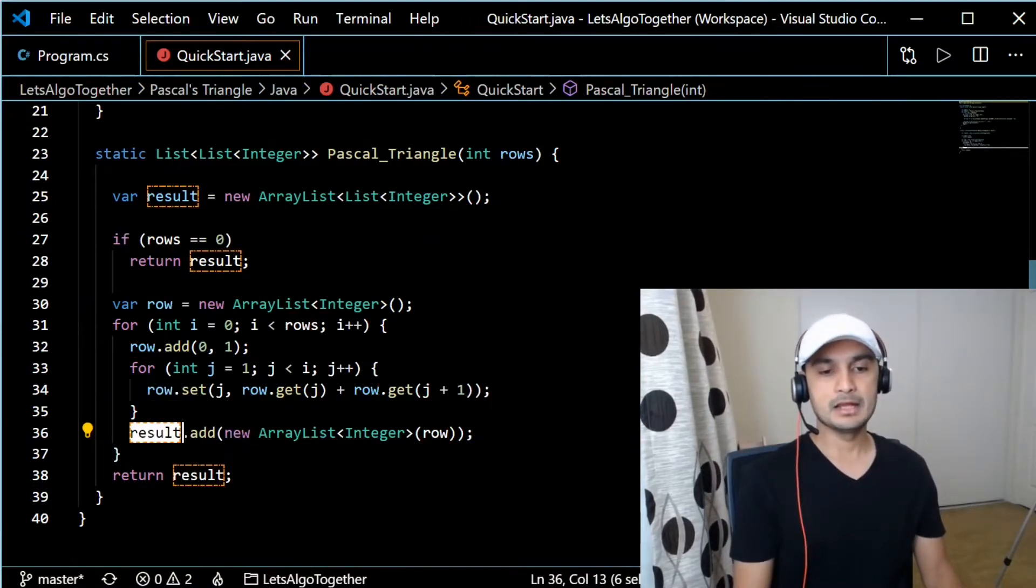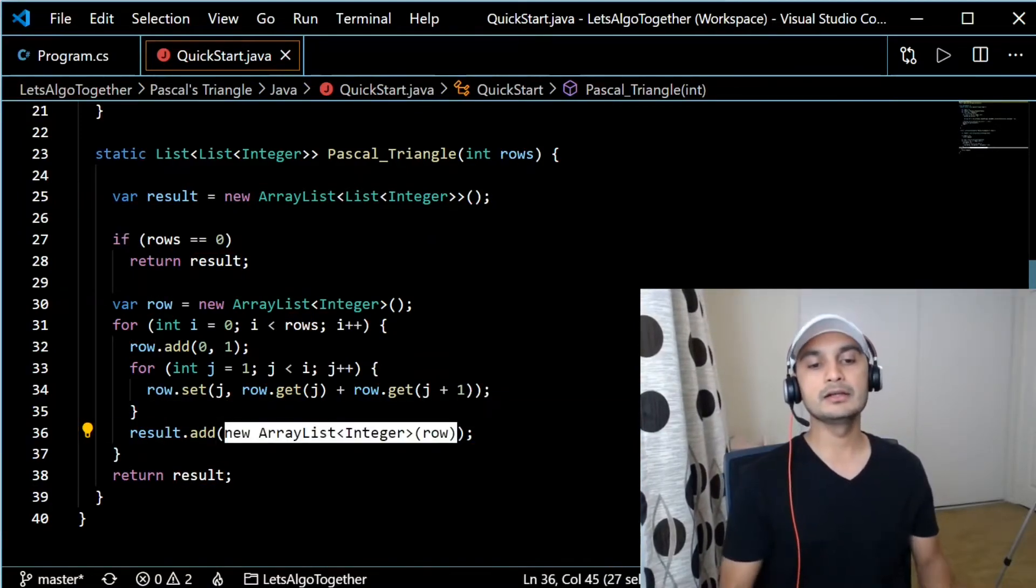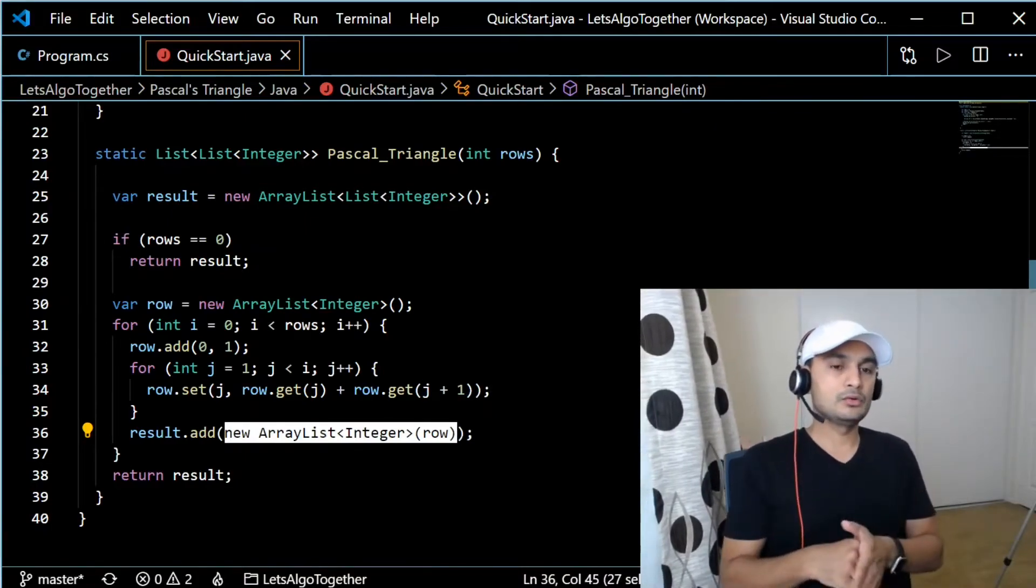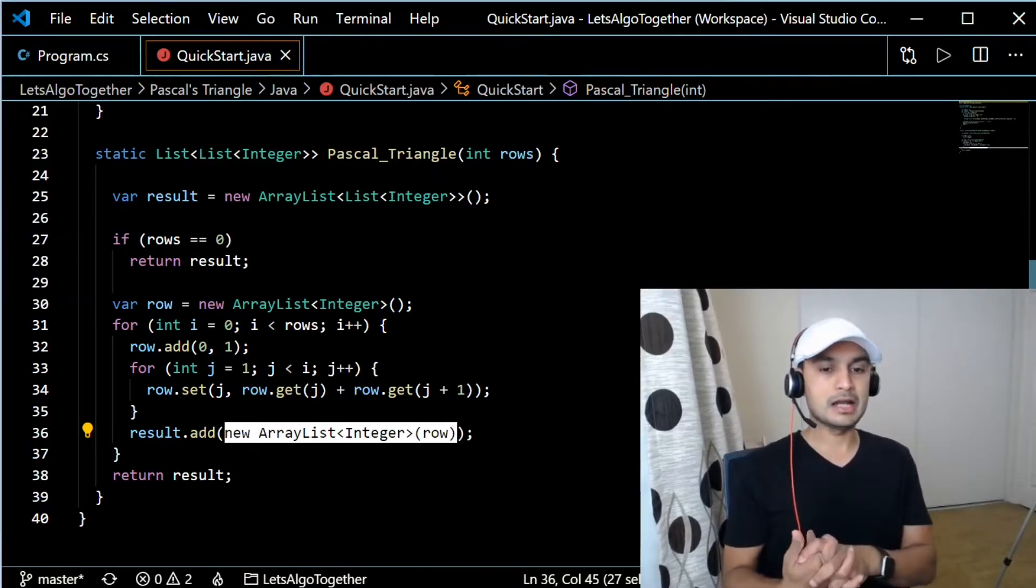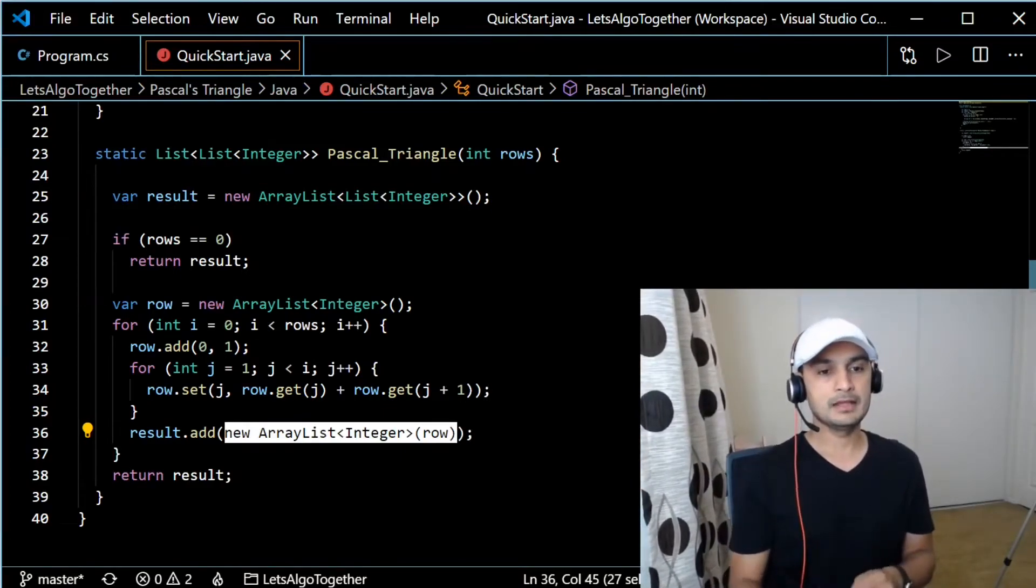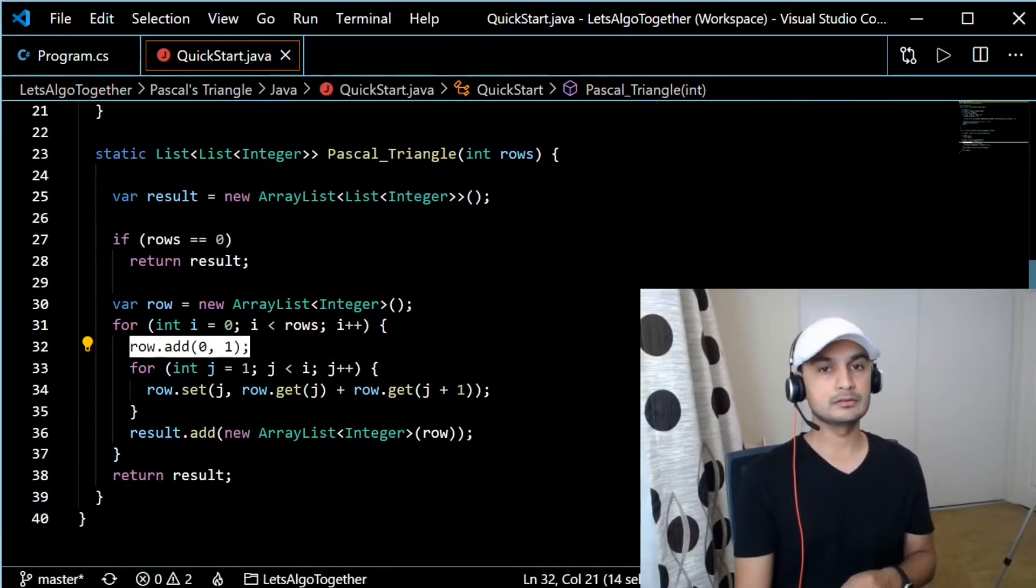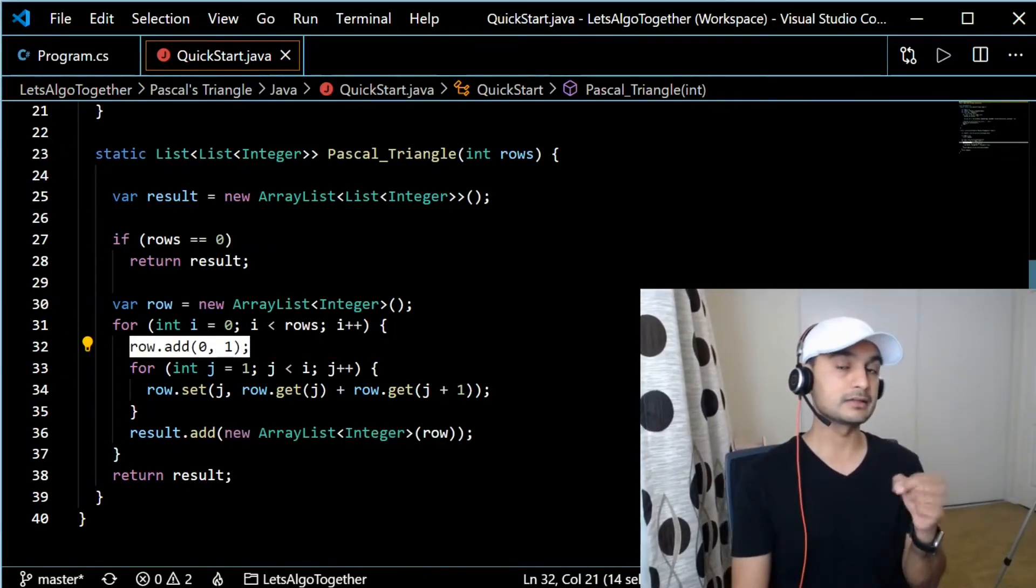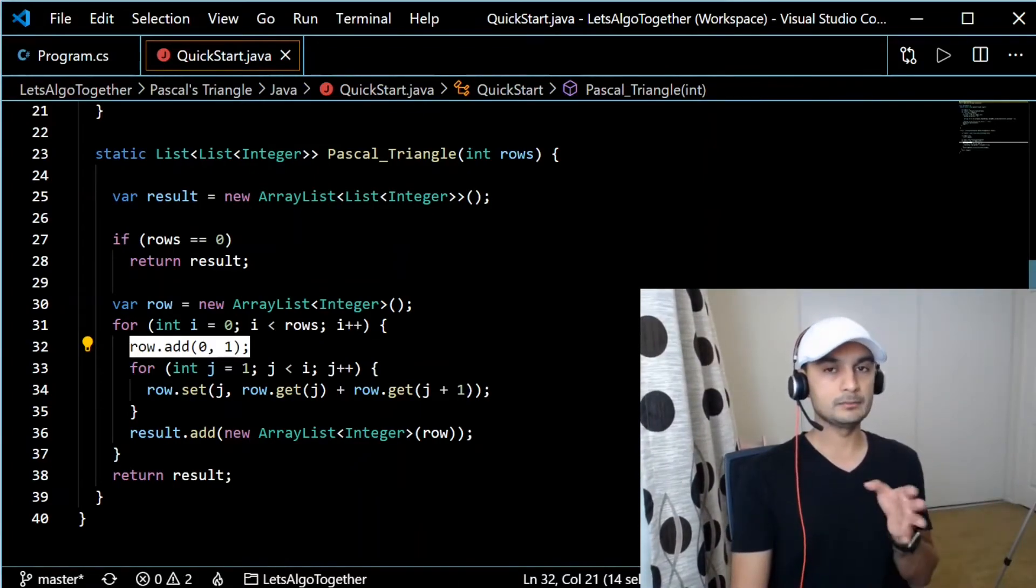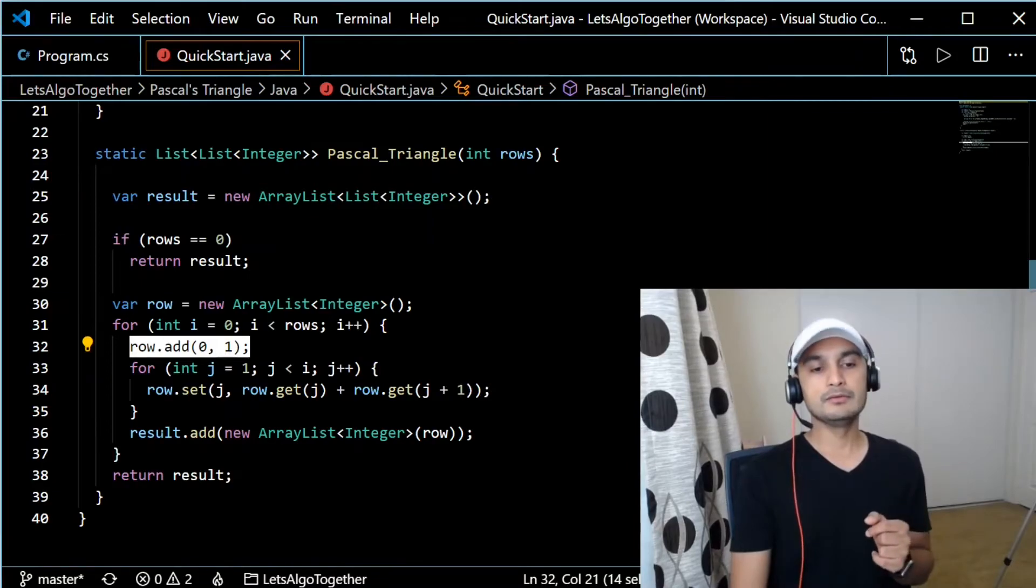And note that while adding it to the result we create a new array list of rows, so technically we are copying that row into result. If we just add row as is, we would be adding by reference, and then when we come back for next iteration it'll change that reference that we added. So we don't want to do that. We want to copy that whole items in the result and then we want to move on to the next row.